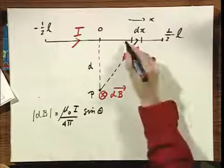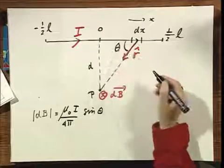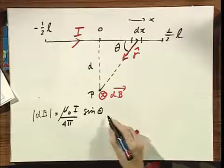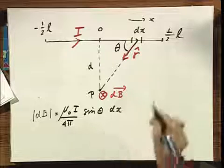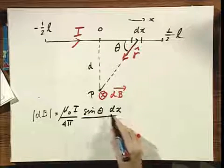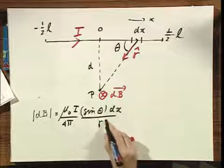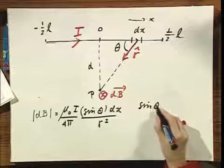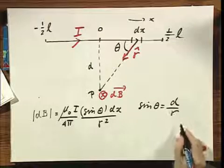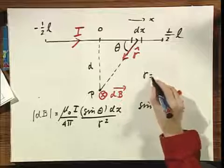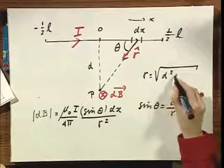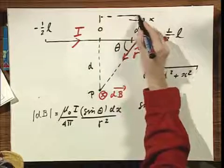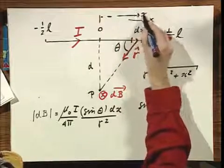Equals mu zero times I divided by four pi times the sine of theta. Because remember, it's a cross product. And if this angle is theta, I have to take the cross product into account between DX and R. And then I get DX, which is my dL, and I divide the whole thing by R squared. Well, I also know that the sine of theta equals D divided by R. And I also know that R equals the square root of D squared plus X squared, if I call the distance from here to my element that I have chosen X.